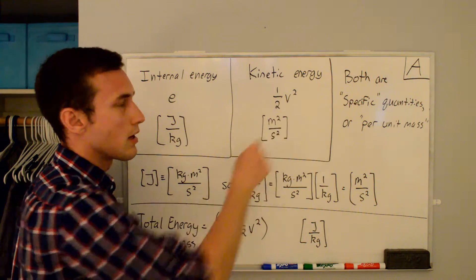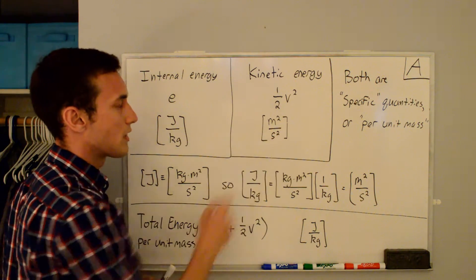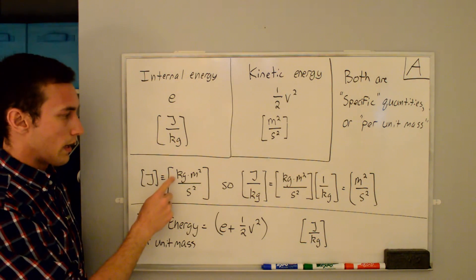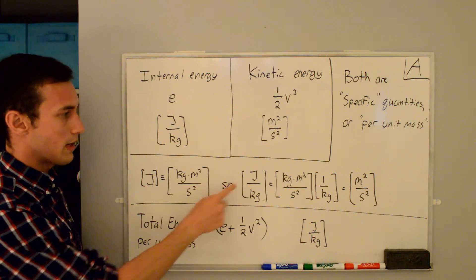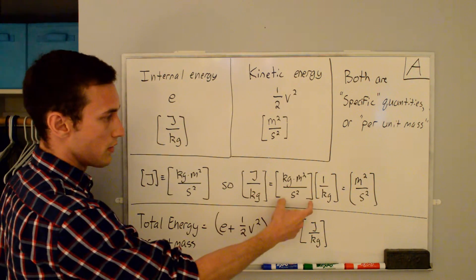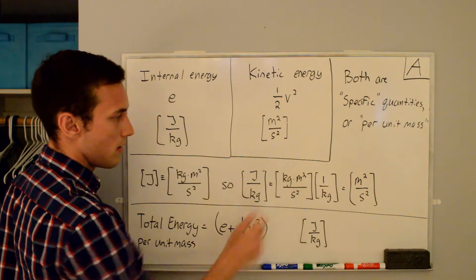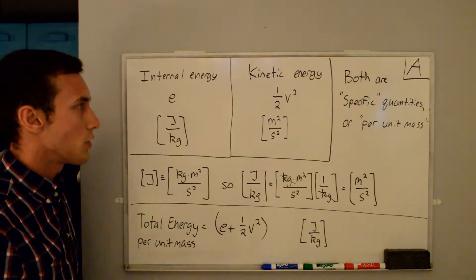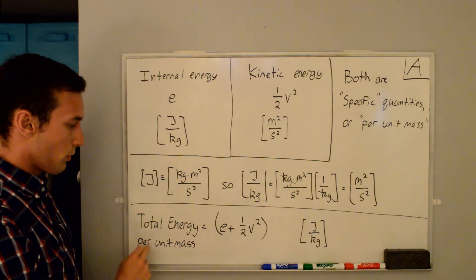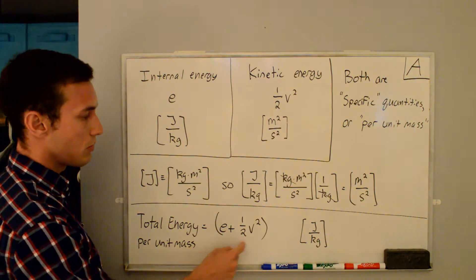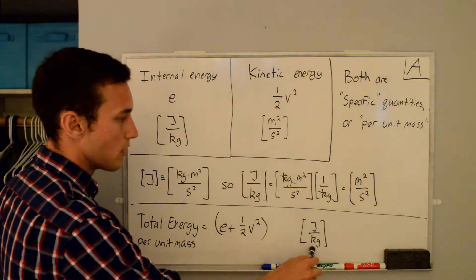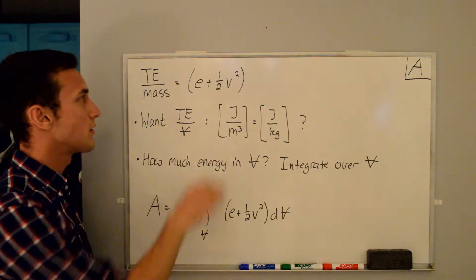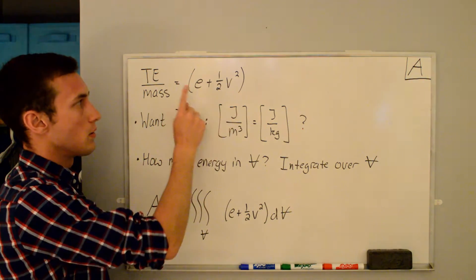If you look at the units of ½v², velocity squared is meters squared per second squared [m²/s²]. You might say these units don't match up, but the base units of joules are kilogram meter squared per second squared [kg·m²/s²]. So joules per kilogram gives meters squared per second squared — the units are actually consistent. The total energy per unit mass is just the sum of internal energy plus kinetic energy: e + ½v², with units of joules per kilogram.